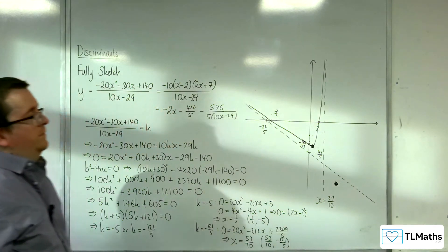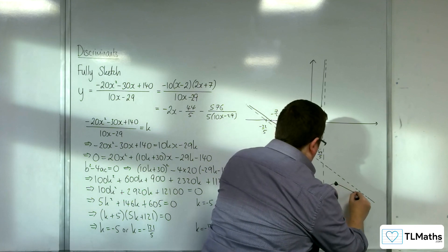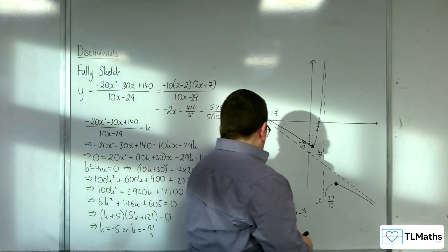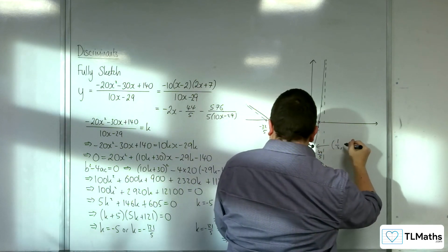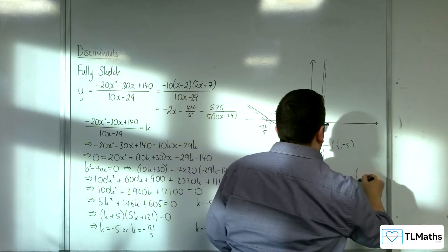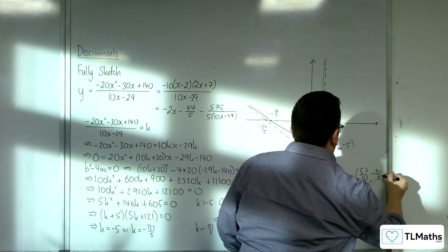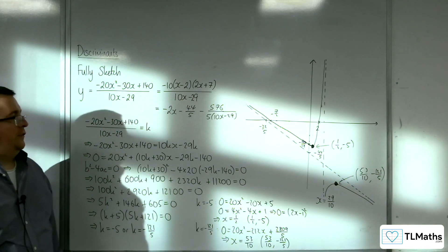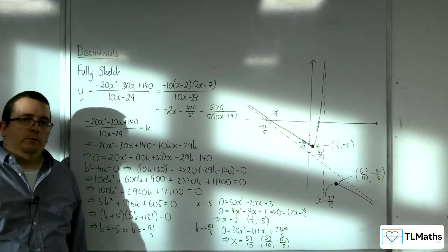I think it's a little bit better. And down here, it's got to look something like that. That's your 1 half minus 5. And this point is the 53 over 10 minus 121 over 5. And so, that is how I can fully sketch this curve and find the stationary points without using calculus.